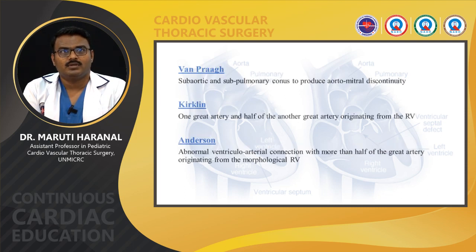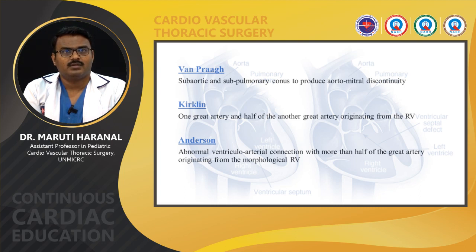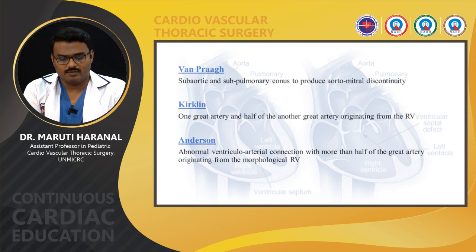According to Ampram, bilateral coni should be present to produce mitral discontinuity to define it as DORV. According to Kirklin, one great artery and half of the other great artery should be originating from the RV. Endesons defines DORV as an abnormal ventriculo-arterial connection in which more than half of the great artery originates from the morphological RV.